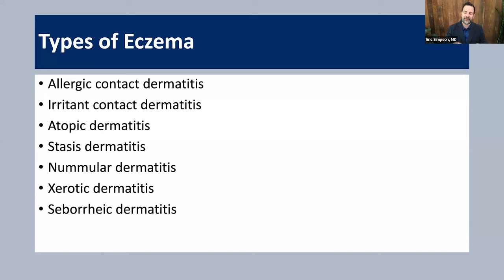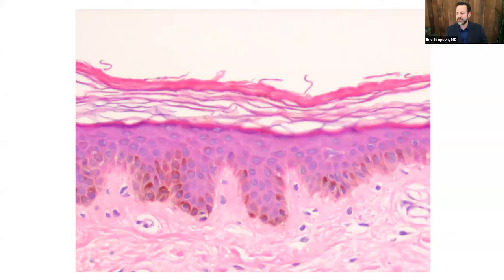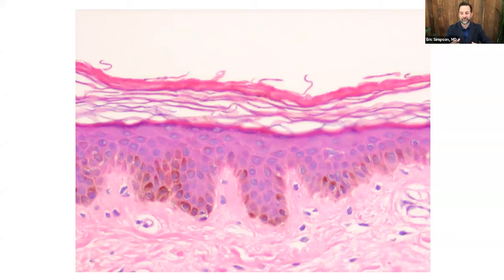Can't you just biopsy and get your diagnosis — whether it's atopic, allergic contact, or nummular eczema? You can't. A biopsy can only tell you you're in the eczema category. It might rule out infection or psoriasis, but it can't tell you which type of eczema or what's causing it.